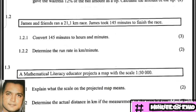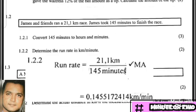Question 1.2.2: determine the run rate in kilometers per minute. The clue is in the question — kilometers per minute means kilometers divided by minutes. We take our distance of 21.1 kilometers and divide by the time of 145 minutes. This gives us 0.1455 kilometers per minute, which is our run rate.